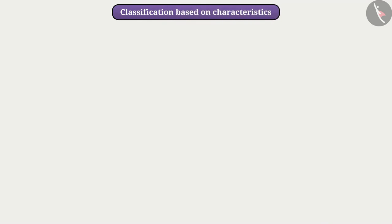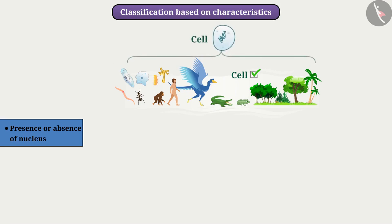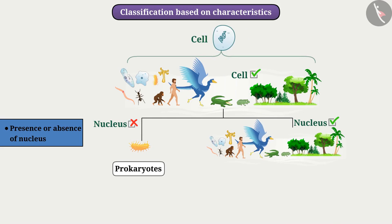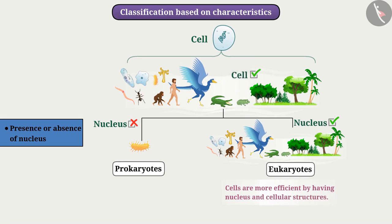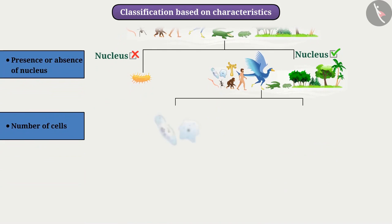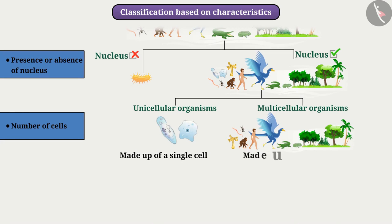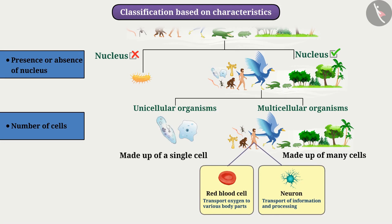Let us now discuss the characteristics on which we do the classification. Presence or absence of nucleus: cells of some organisms do not have a nucleus — these are called prokaryotes. Organisms that have nuclei in their cells are called eukaryotes. Cells are more efficient by having a nucleus and cellular structures. Regarding number of cells: the body of unicellular organisms such as amoeba is made up of a single cell, while the body of multicellular organisms is made up of many cells. Both have different body structures, and cells in multicellular organisms become specialized, which helps in division of labor in the body.